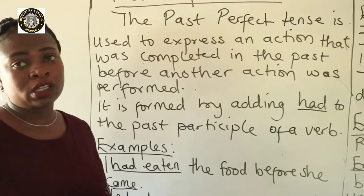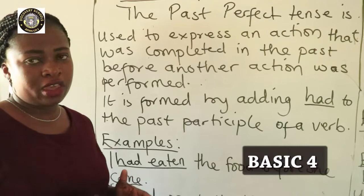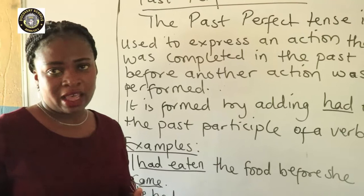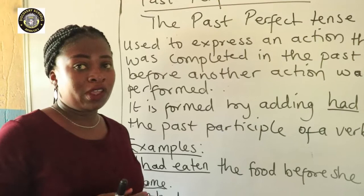For example, we have ring, rang, rung. The 'rung' there is the past participle of the verb 'ring.' Then we have eat, ate, eaten. 'Eaten' there is the past participle of the verb.